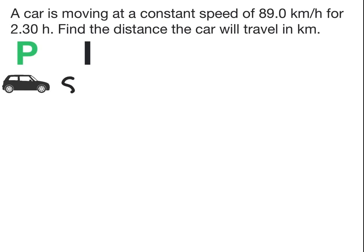In this example, we know the car's speed is 89.0 km per hour, and the time equals 2.30 hours. We don't know the distance the car will travel.